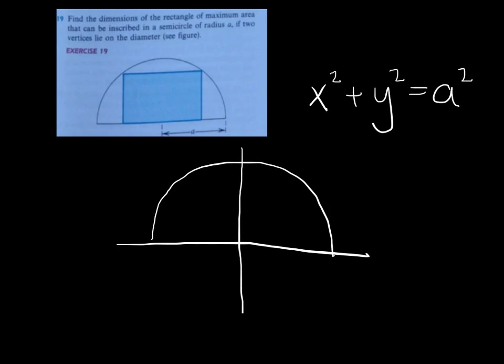And I'm redrawing the rectangle on an xy coordinate plane because I want to specify that this point right here is the point x comma y. And that means the base of the rectangle is going to be 2x, and the height of the rectangle is going to be y.